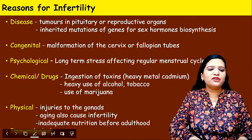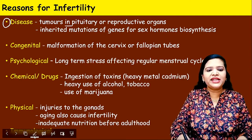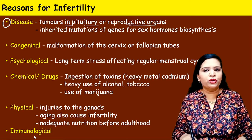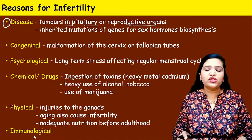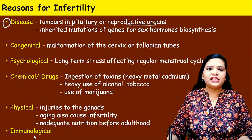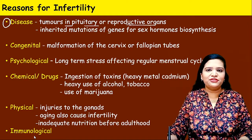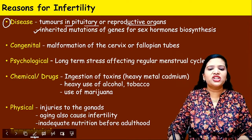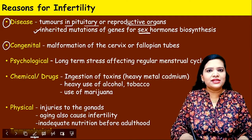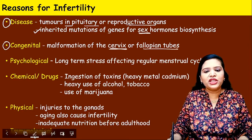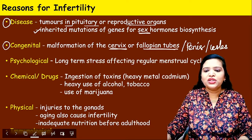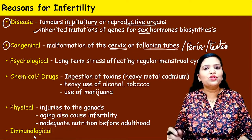For example, disease: a tumor in the pituitary gland or in any reproductive organs may lead to infertility. The pituitary gland is the master gland of the endocrine system and controls sex hormone production. A tumor there causes deficiency in estrogen or progesterone production, leading to infertility. The second reason could be mutations in genes responsible for sex hormone synthesis. Congenital reasons include malformation of the cervix, fallopian tubes, penis, or testes.